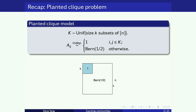You have seen this picture a lot throughout the workshop, but I'm just going to do a quick recap. This is the planted clique model. Suppose there is a size-K clique — a subset of the vertices 1 through N — and for pairs of vertices both inside the clique, there is an edge between them. So there is a size-K clique planted inside this random graph, and all other edges are formed randomly and independently with probability one-half.